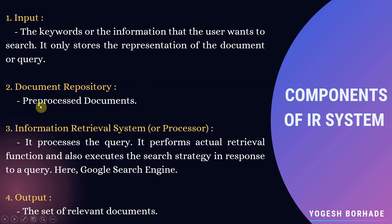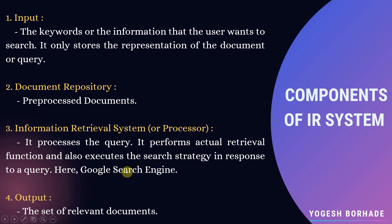The document repository stores pre-processed documents which are referred to by the processor during processing. The information retrieval system or processor processes the input query, performs the actual retrieval function, and executes the search strategy in response to a query. Here we are considering the Google search engine as our processor. The output is the set of relevant documents.